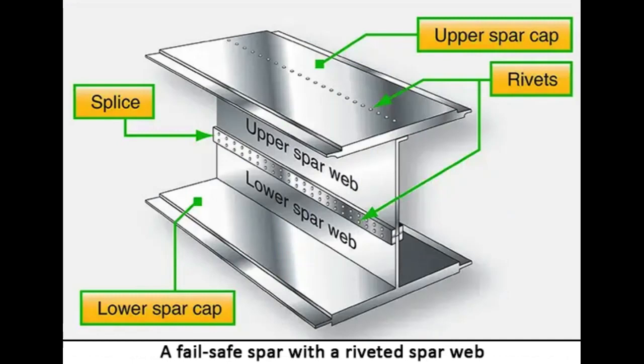Fail-safe spar web design also exists. Fail-safe means that should one member of a complex structure fail, some other part of the structure assumes the load of the failed member and permits continued operation. A fail-safe spar is made in two sections: the top section consists of a cap riveted to the upper web plate, and the lower section is a single extrusion consisting of the lower cap and web plate. These two sections are spliced together to form the spar. If either section breaks, the other can still carry the load.